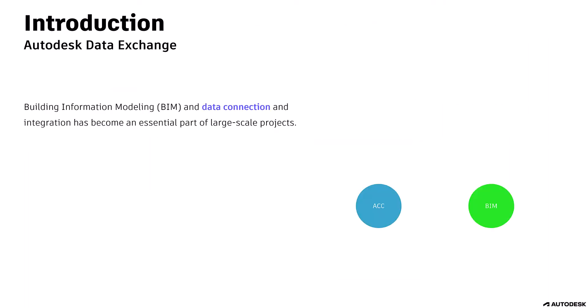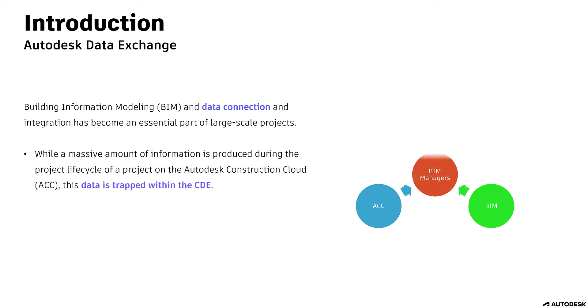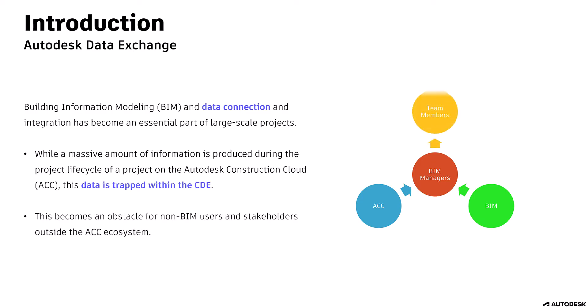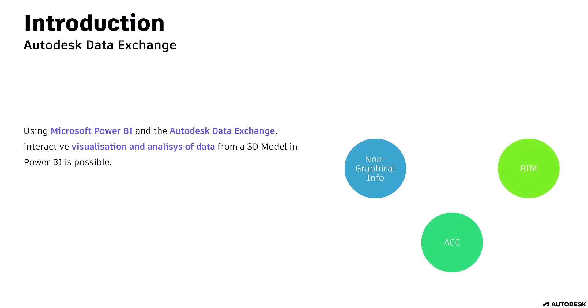Building information modeling, or BIM in short, and data connection and integration has become an essential part of large-scale projects. While a massive amount of information is produced during the lifecycle of a project on the Autodesk Construction Cloud, this data is trapped within the Common Data Environment, or CDE. This becomes an obstacle for non-BIM users and stakeholders outside the ACC ecosystem. Using Microsoft Power BI and the Autodesk Data Exchange extensions, interactive visualization and analysis of data from a 3D model in Power BI is possible.